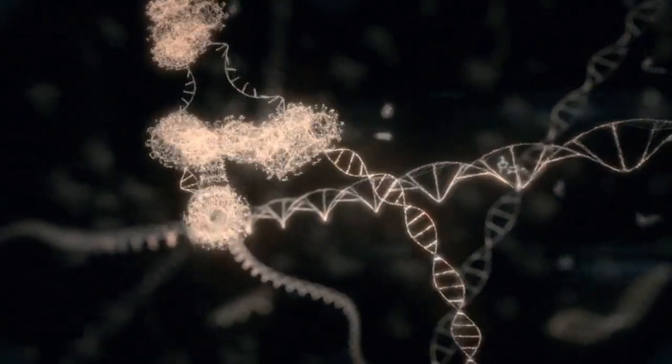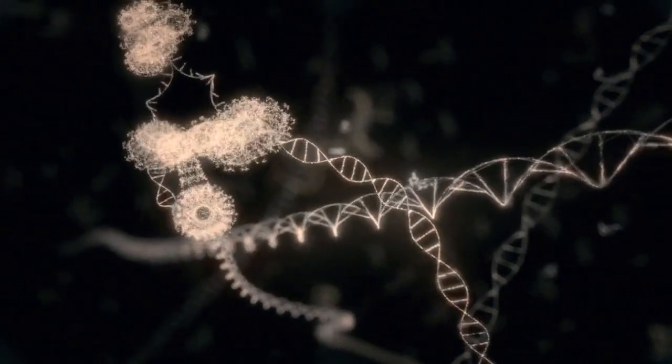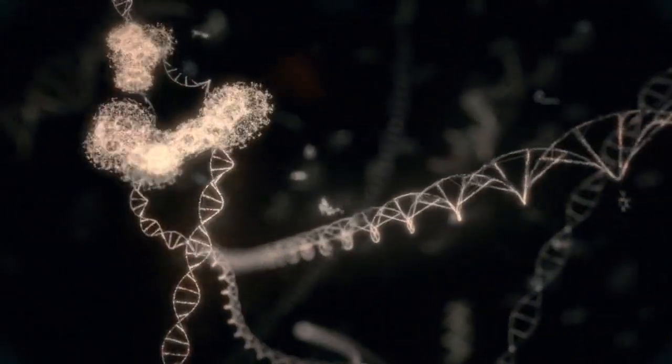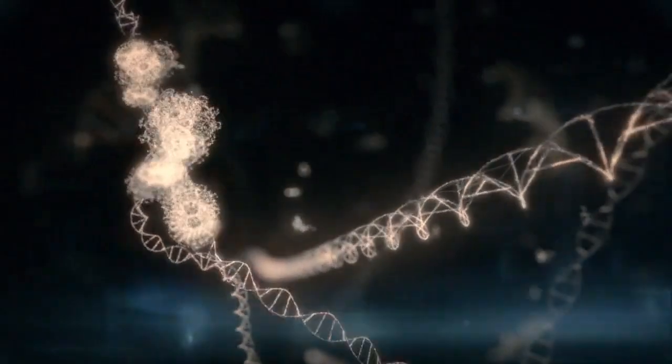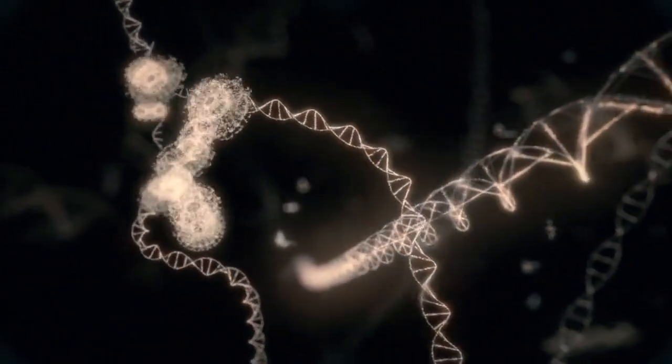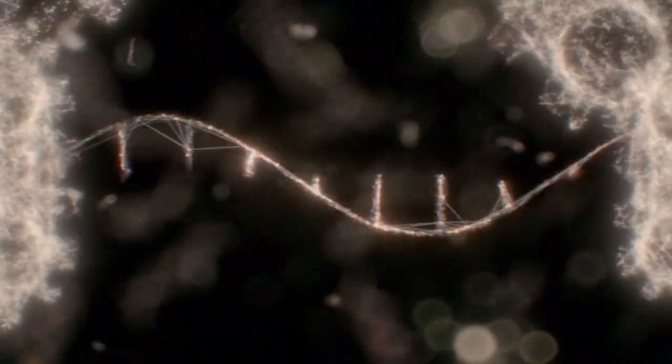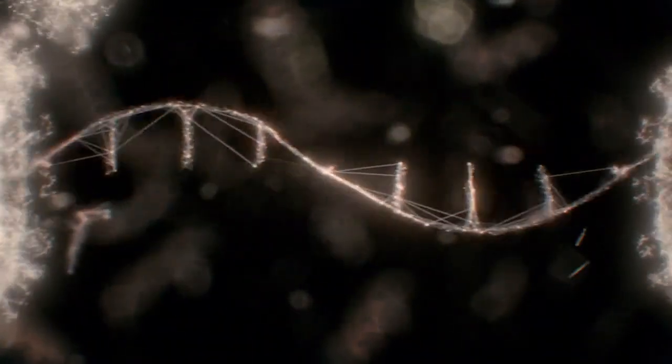When a living cell divides in two, each one takes away with it a complete copy of the DNA. A specialized protein proofreads to make sure that only the right letters are accepted, so that the DNA is accurately copied. But nobody's perfect.